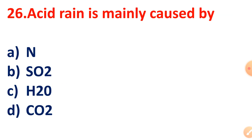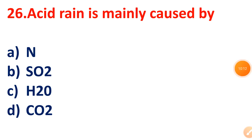Question 26: Acid rain is mainly caused by what? It is caused by SO₂.